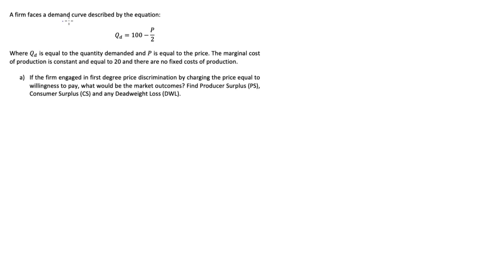The question I'm going to go through: a firm faces a demand curve described by the equation Q_D = 100 minus P over 2, where Q_D is the quantity demanded and P is the price. The marginal cost of production is constant and equal to 20, and there are no fixed costs of production. We're asked: if the firm engages in first degree price discrimination through charging price equal to willingness to pay, what would be our market outcomes? Find producer surplus (PS), consumer surplus (CS), and any deadweight loss (DWL).